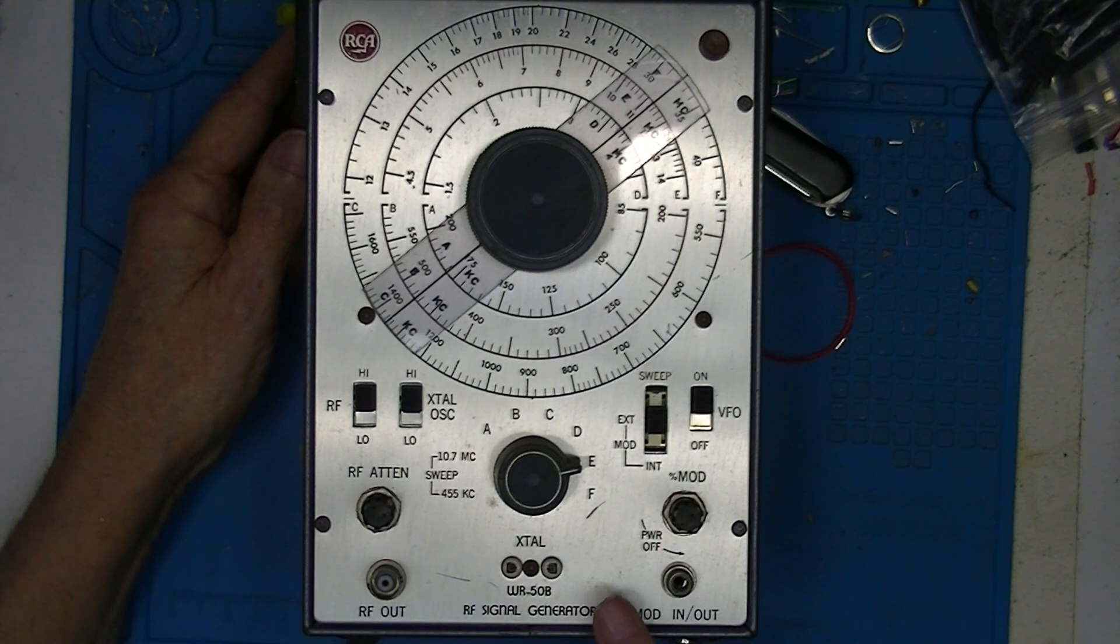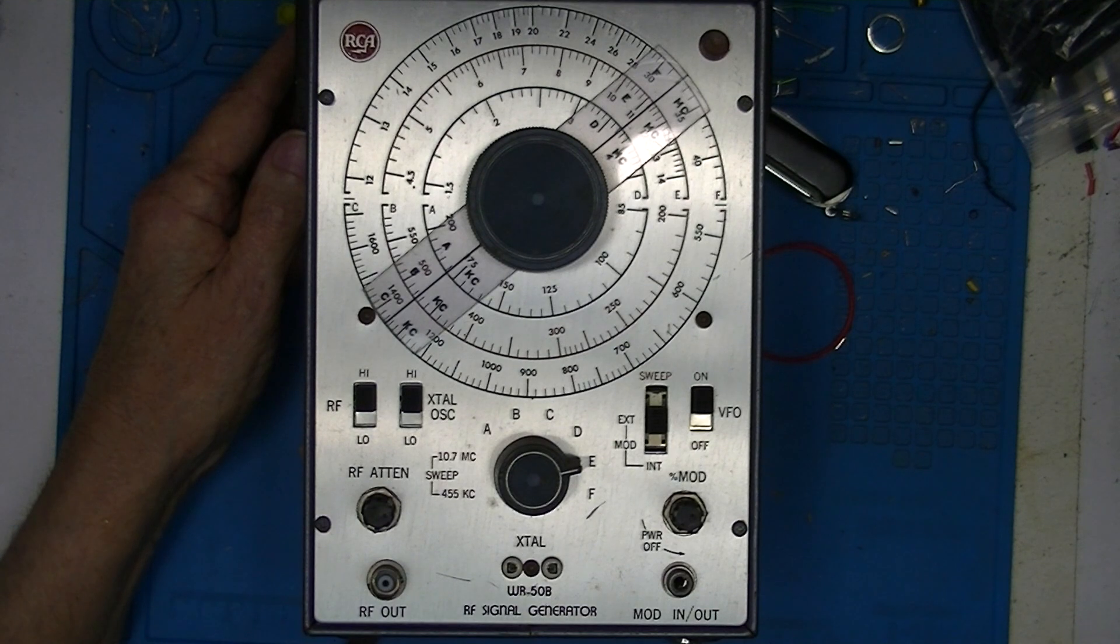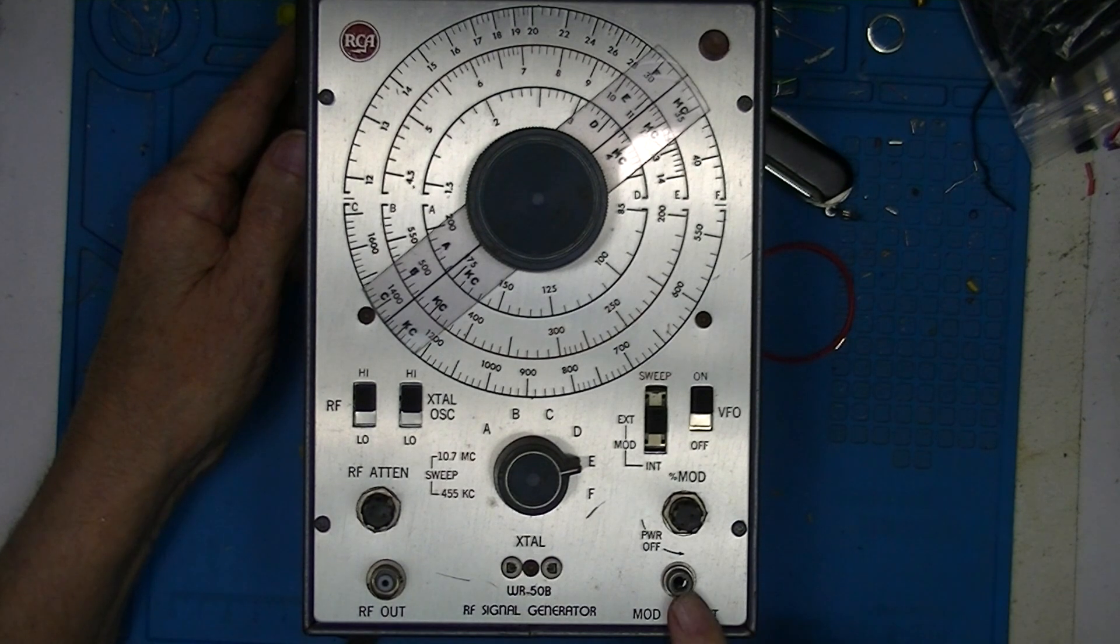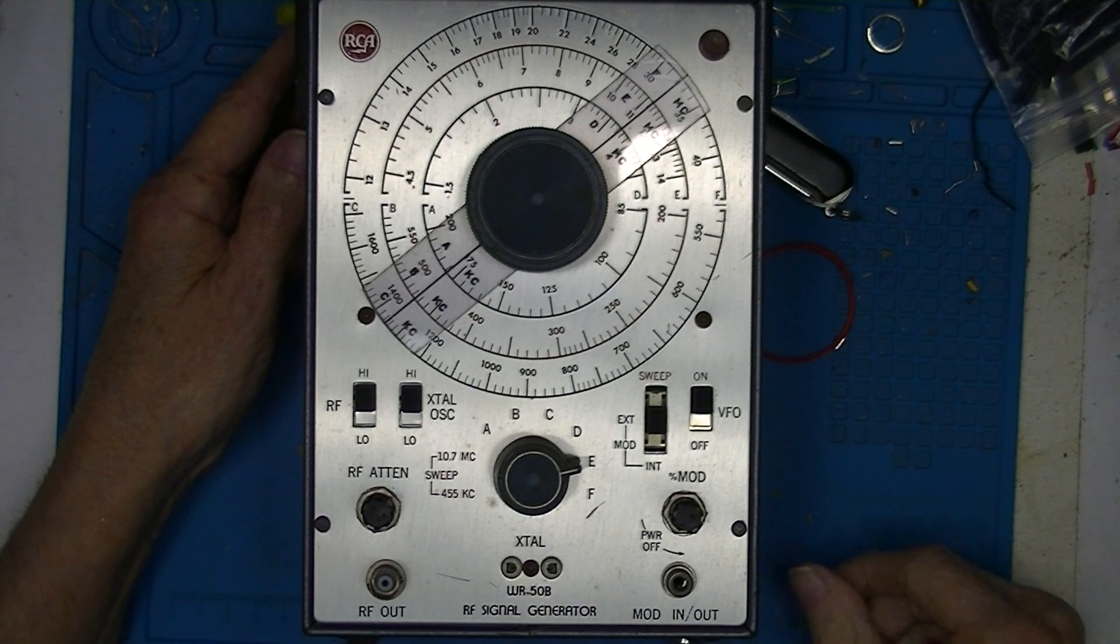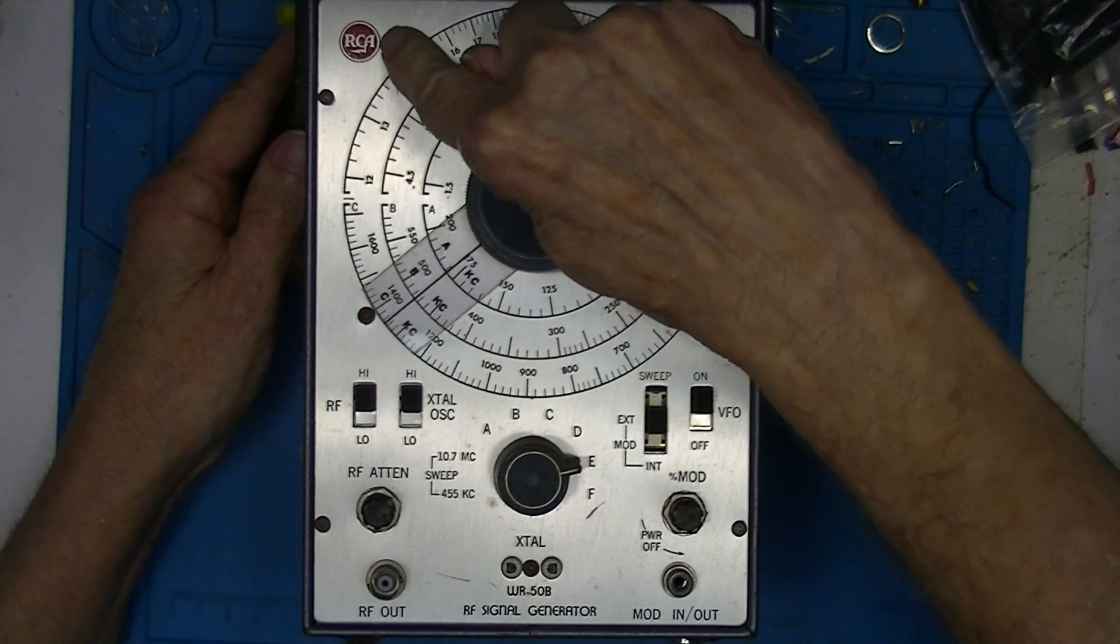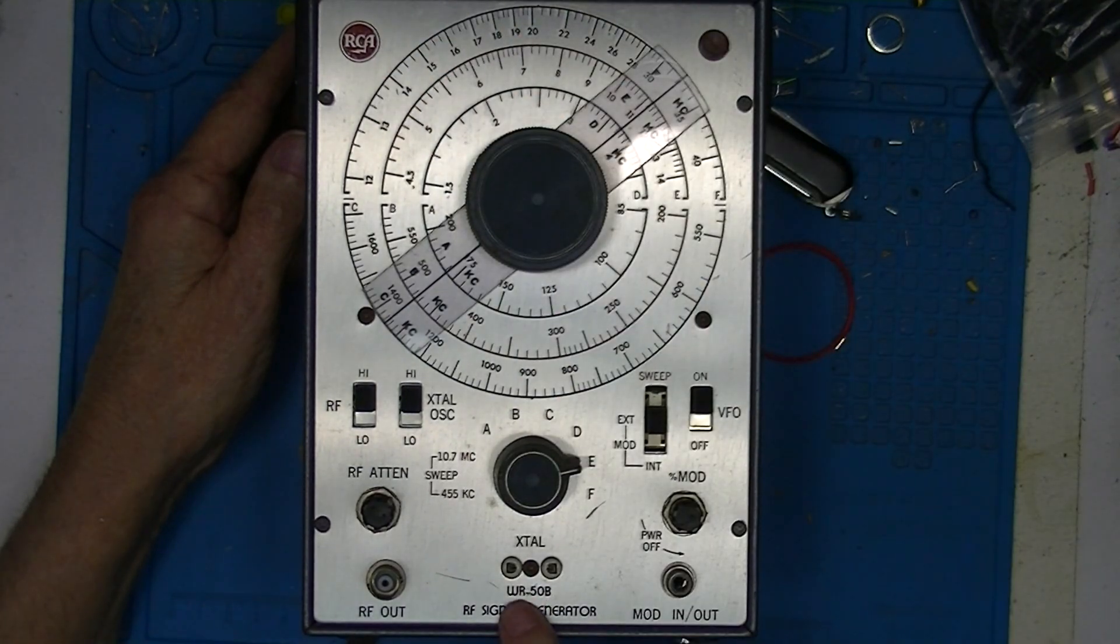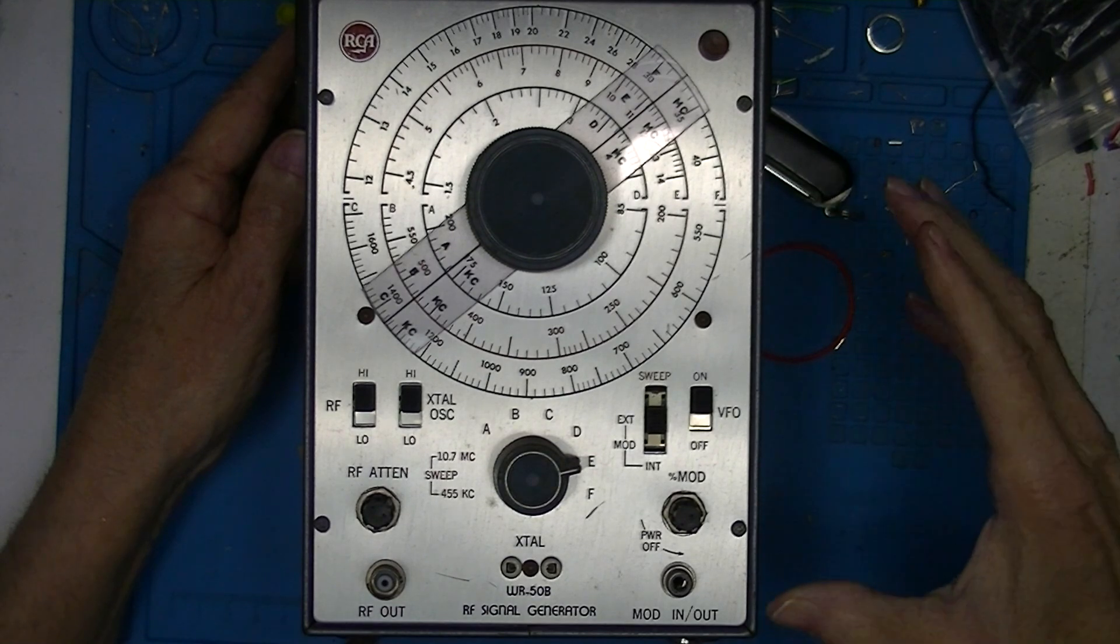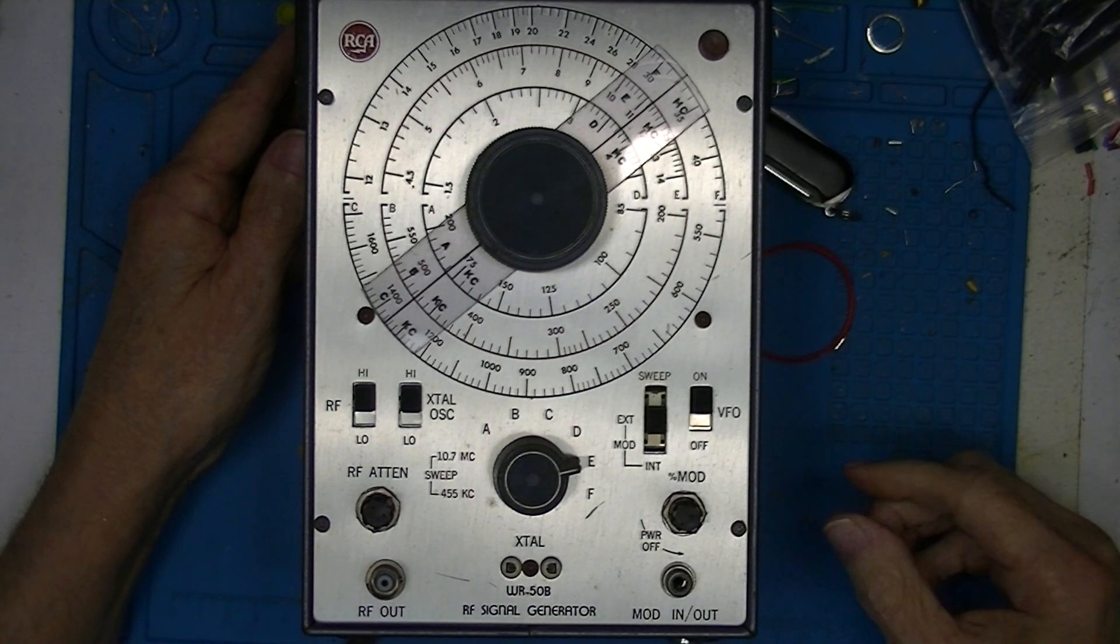In 1966 this cost $65, $45 in kit form. At the same time the 191 cost $700. This is an RCA WR-50B RF signal generator. There was a WR-50A, they seem pretty rare. They look just like this but are apparently wired for 220 volt line voltage, and there's a WR-50C.